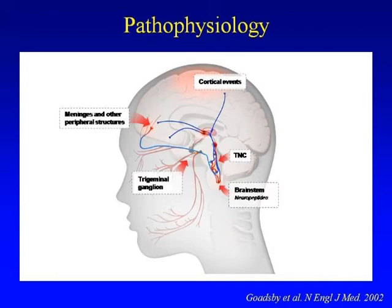Beyond pain and nociception, there are other features of migraine, like photophobia, phonophobia, and nausea. There are brainstem centers that regulate these events in migraine, and while we don't know if there is a direct connection to nociceptive pathways, it is plausible. A lot of work is ongoing to see whether photophobia is a major factor in developing the pain.